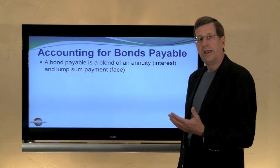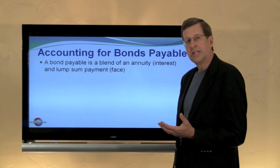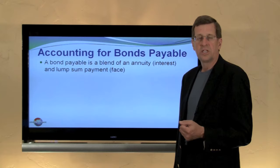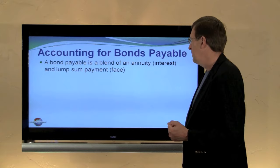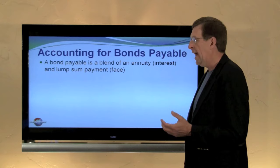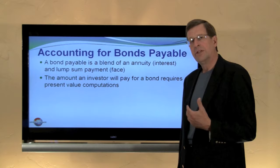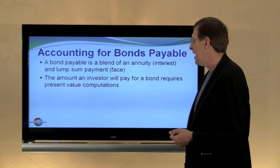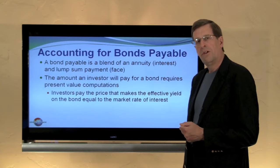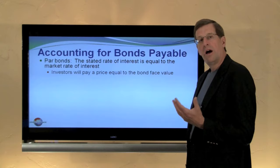Let's begin by thinking about what a bond is. A bond is a promise to pay a stream of future cash flows as well as the maturity value. So a $1,000, 10% bond would pay $100 per year in interest, and at maturity the $1,000 would be repaid. A bond payable is really a blend of an annuity — the periodic interest payments — and a lump sum amount due at maturity. The amount an investor would be willing to pay requires consideration of the present value of the cash flows. Investors will pay a price that makes the effective yield equal to the market yield at the time of issuance.